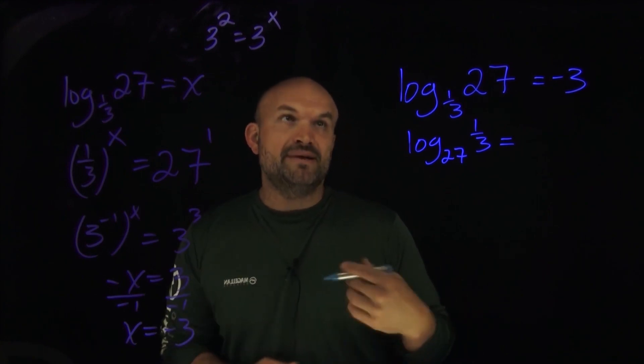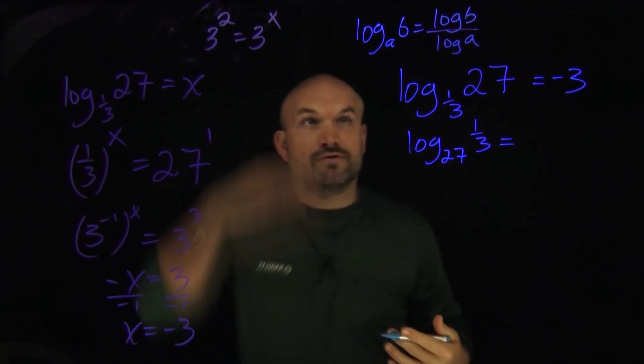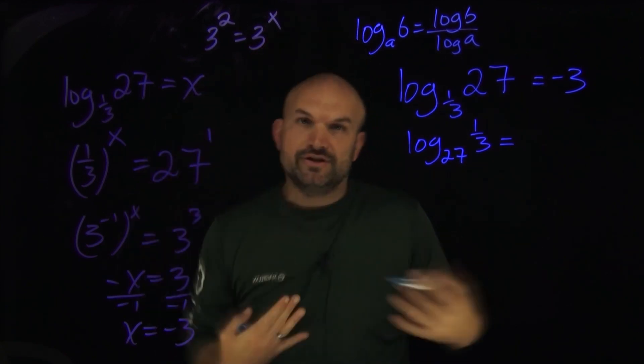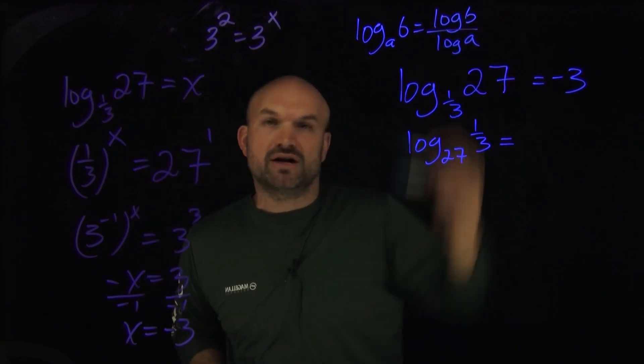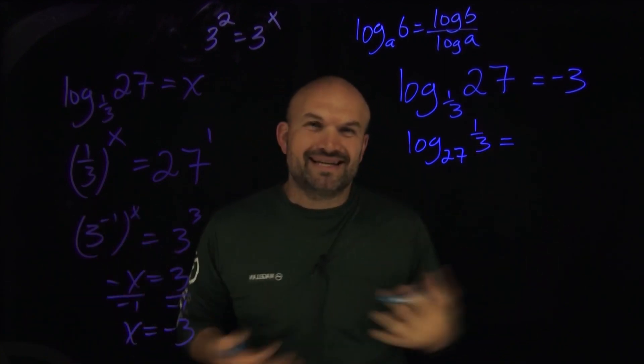So let's go ahead and rewrite this using the change of base formula. And remember the change of base formula basically just says, if you have a logarithm with base a of b, then you can just rewrite that as the log of b over log of a. And again, use the same base. It could be like natural log or it could be like log base 10. It doesn't really matter.